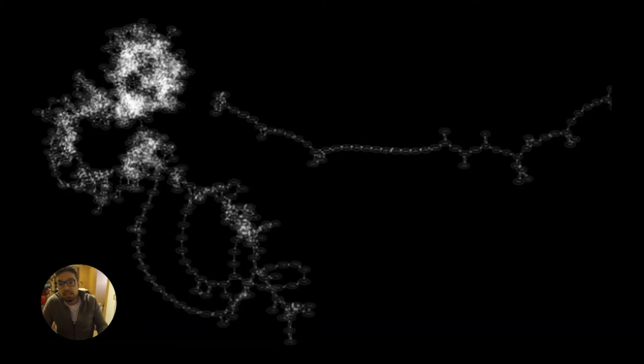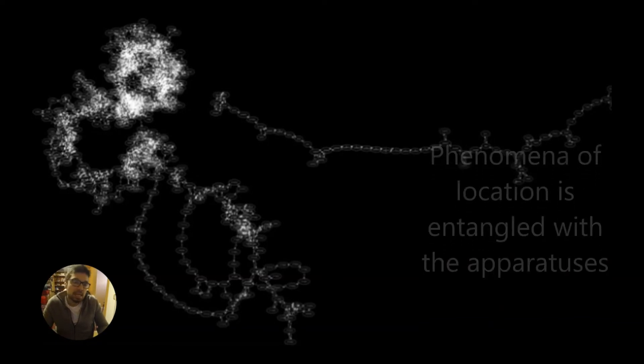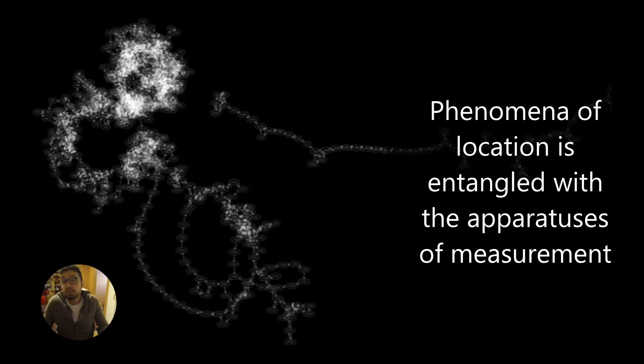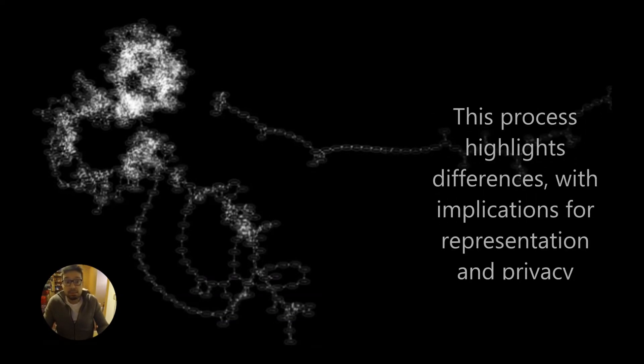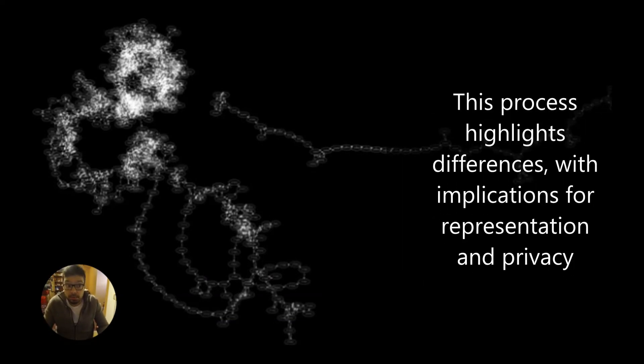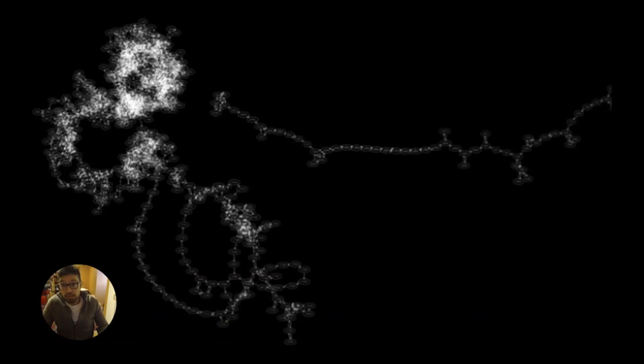Diffractive engagements with data about people's movement and location led to agential cuts between the lived experience of navigating and occupying different places in relation to the data produced from different apparatuses, highlighting differences between how places can be defined differently, and how network data is unequally distributed between geographical locations, with both representativity and privacy implications.